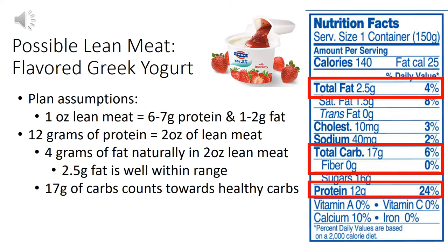What about flavored Greek yogurt? Can that count as a protein? Yes, of course it can. This particular brand has 12 grams of protein, basically two ounces of lean meat. Two ounces of lean meat can have four grams of fat, and this one only has 2.5 — totally within range. But look at those carbs: 17 grams, all coming from sugar. You do need to count those towards your healthy carb amount. Don't worry about the sugar content though — the protein present in Greek yogurt is predominantly casein, which will slow down the digestion rate and slow the delivery of sugar to your system, so you won't see as much of a spike in your glucose response.